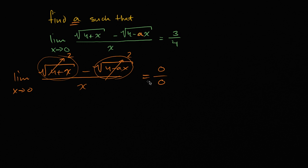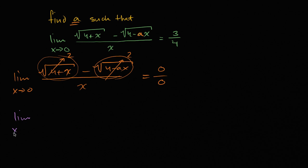When you get an indeterminate form like this, you say L'Hôpital's rule might apply. Since we get zero over zero, this limit is going to be the same thing as the limit as x approaches zero of the derivative of the numerator over the derivative of the denominator.